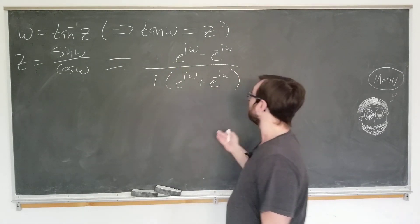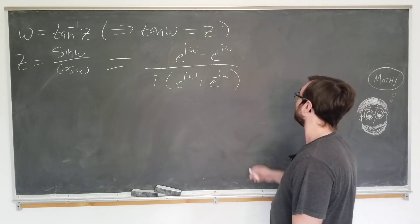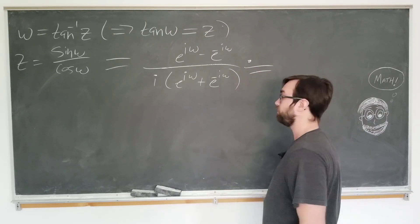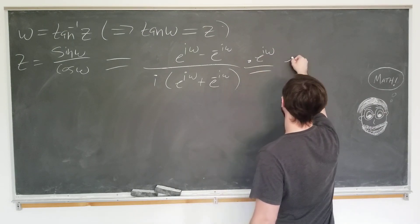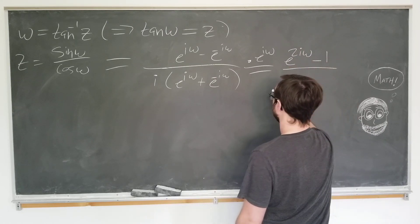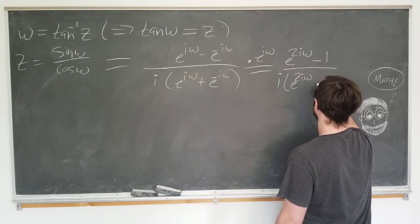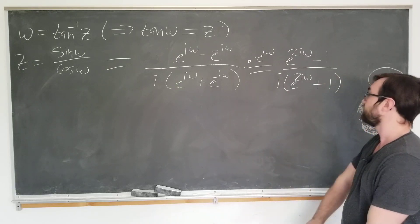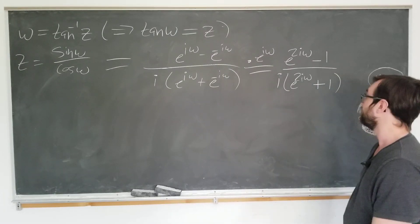So we have e to the i omega minus e to the minus omega over i times e to the i omega plus e to the minus i omega. Here, we want to do a pretty obvious trick. We're going to multiply by e to the plus i omega. When we do this, we get e to the 2i omega minus 1 over i e to the 2i omega plus 1.